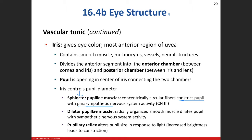Specifically, cranial nerve number three — ocular motor — controls the sphincter pupillae. You should know the four cranial nerves that are part of the parasympathetic nervous system: three, seven, nine, and ten — ocular motor, facial, glossopharyngeal, and vagus. Another name for the parasympathetic division is the cranial sacral division, where 'cranial' refers to those four cranial nerves.